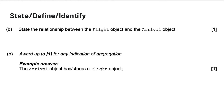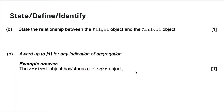State, define, and identify are generally one-point questions. State the relationship — really simple, just one sentence. It's not so much the command term itself as the point value that gives you an indicator of how thoroughly you need to answer these questions.